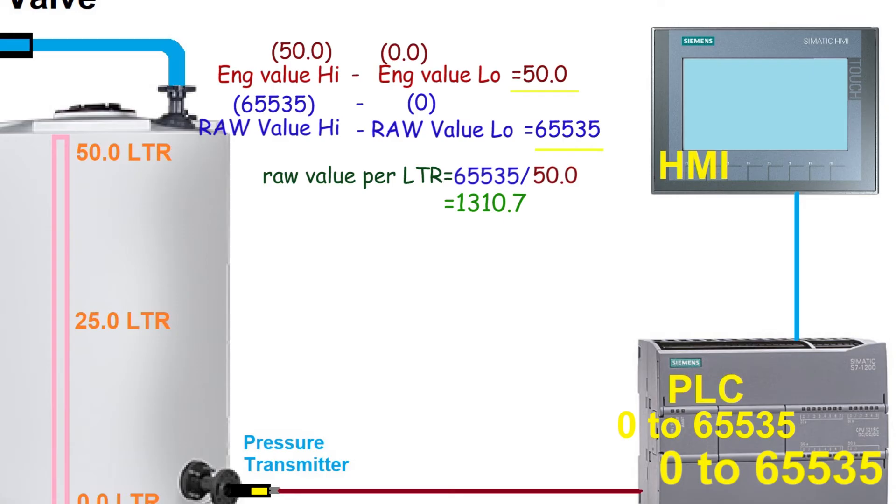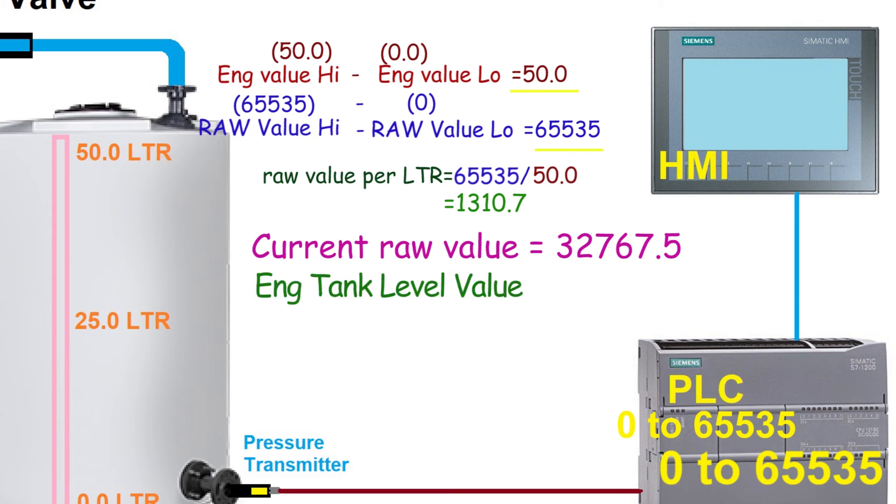Now this value 1310.7 is the raw sensor value per liter of water in the tank. Suppose our raw value is 32767.5, so we will just divide this raw value by 1310.7 and the answer is 25.01 liters. So this is how we can convert 4 to 20 milliamps sensor output to the real engineering value.